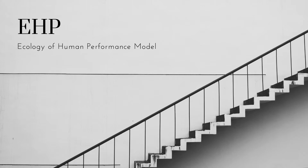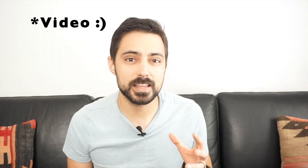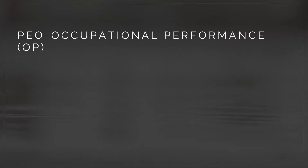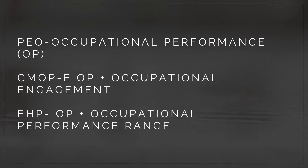The ecology of human performance model is a well-rounded model that shares overlap with PEO and CMOP-E, but it has some unique things that help to distinguish it. EHP focuses on occupational performance and occupational performance range. So when working with a case where the client wants to increase their occupational performance range, this model would be a good one to consider. It conceptualizes occupational performance range by looking at how the person interacts dynamically with the context, and vice versa. The person-context interaction either increases or decreases the range of tasks that the person can do, and that range makes up the occupational performance range.